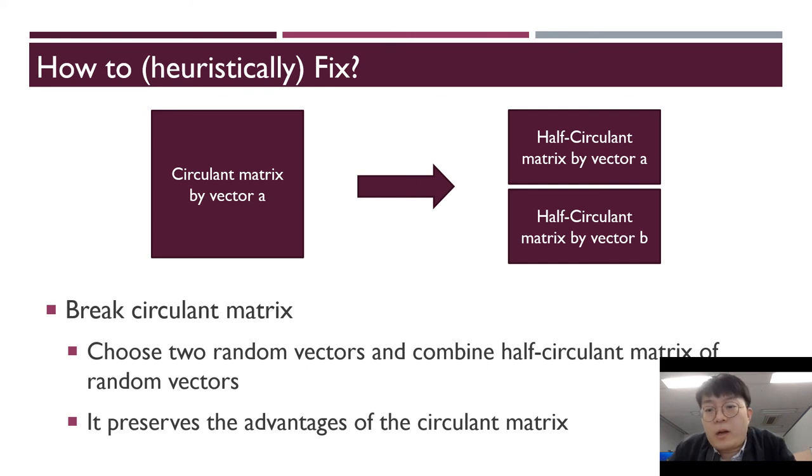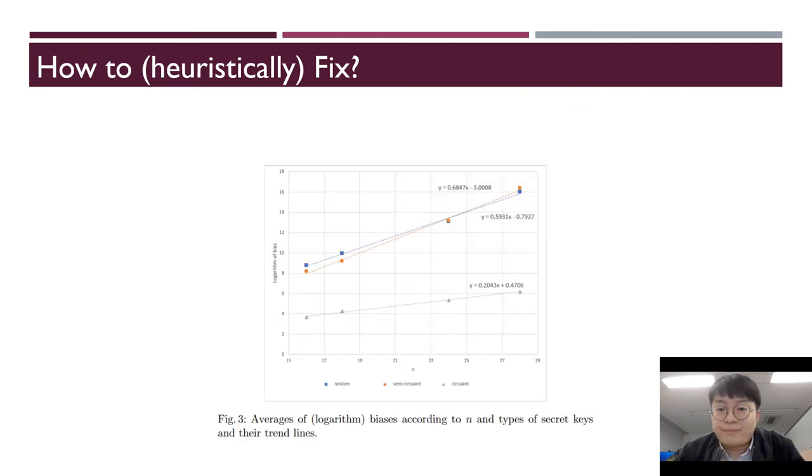In the new weak PRF case, to prevent our attack, we break the circulant matrix structure. Choose two random vectors and combine half-circulant matrices of random vectors. This fixation preserves the advantages of the circulant matrix and also prevents our attack. In our experimental results, weak PRFs have similar security when using semi-circulant matrix and random matrix. In both cases, it is significantly safer than circulant matrix.